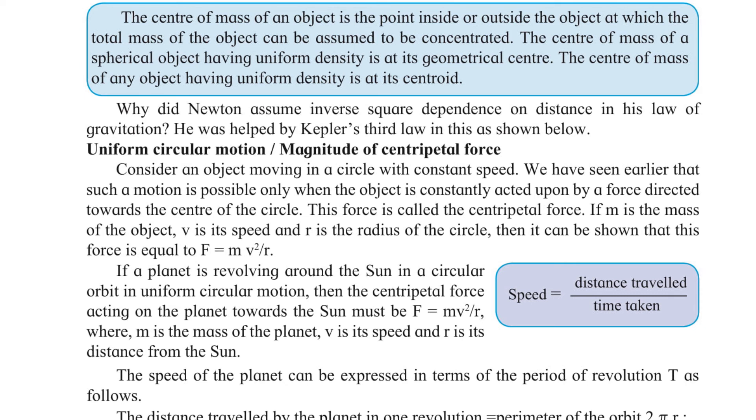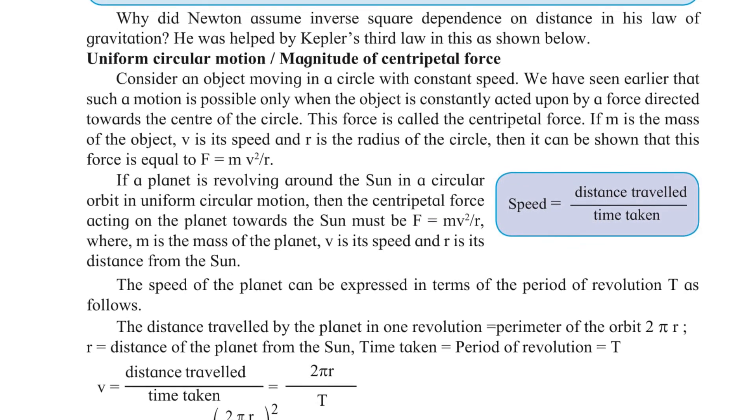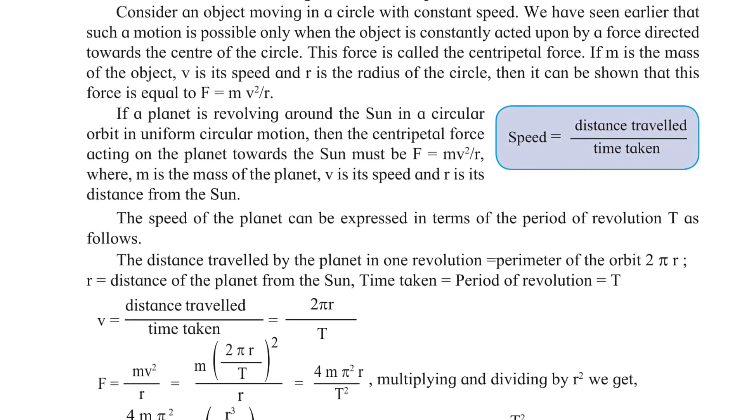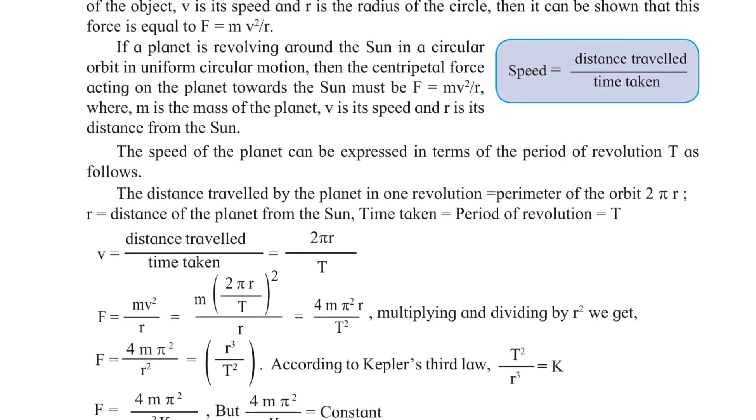If a planet is revolving around the sun in a circular orbit in uniform circular motion, then the centripetal force acting on the planet towards the sun must be F = mv²/r. m is the mass of planet, v is the speed, and r is the distance from the sun. What is the formula of speed? Speed equals distance traveled upon time taken.